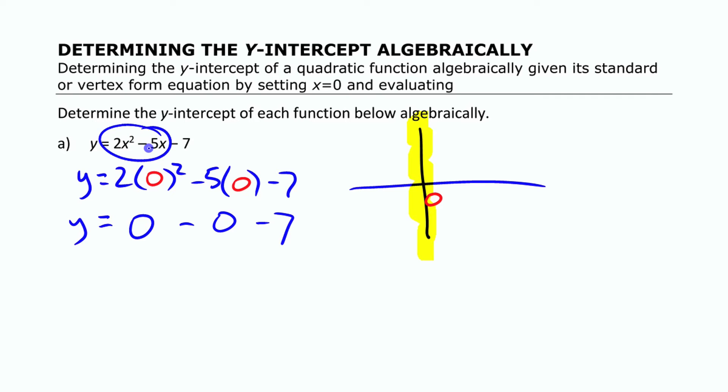In fact, any term with x in it is going to turn to 0 and you're just going to be left with that constant term on the end. That constant term is the y-intercept. That's probably something you're just going to get to looking at and realizing that constant term on the end is the y-intercept. So you know that that function would have a y-intercept of negative 7. The y-intercept is the constant term.